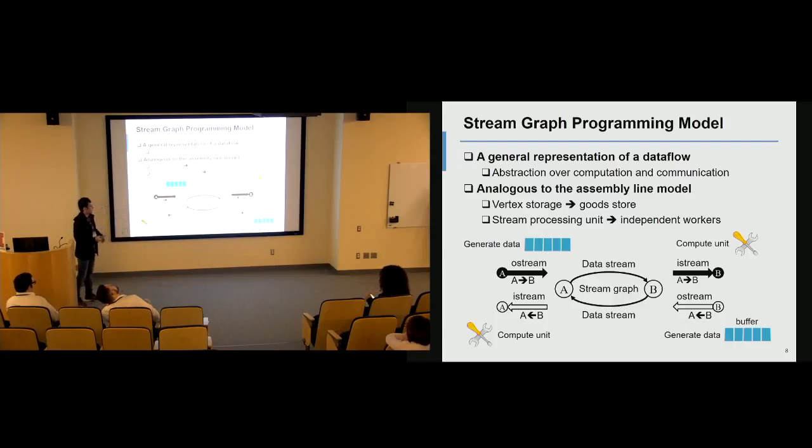Once the other end receives the data, it can start processing and do computation on top of this data. As you can see, the stream graph programming model is much more flexible because once we receive data, we can immediately launch computation. We don't have to wait, for example in some conventional data flow graphs, until all the data arrives before you can do computation. In this case, we can tune the performance in much more detail.